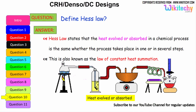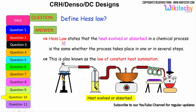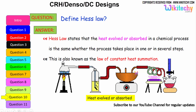Define Hess's Law: Hess's Law states that the heat evolved or absorbed in a chemical process is the same whether the process takes place in one or in several steps. This is also known as the law of constant heat summation.